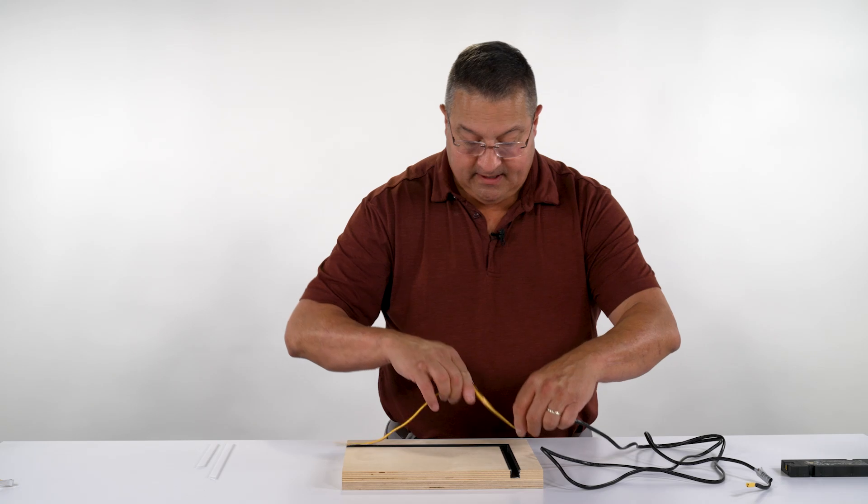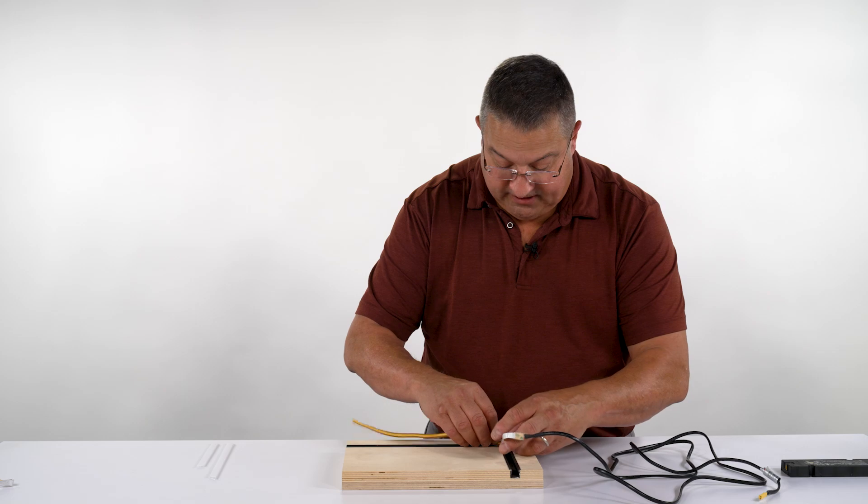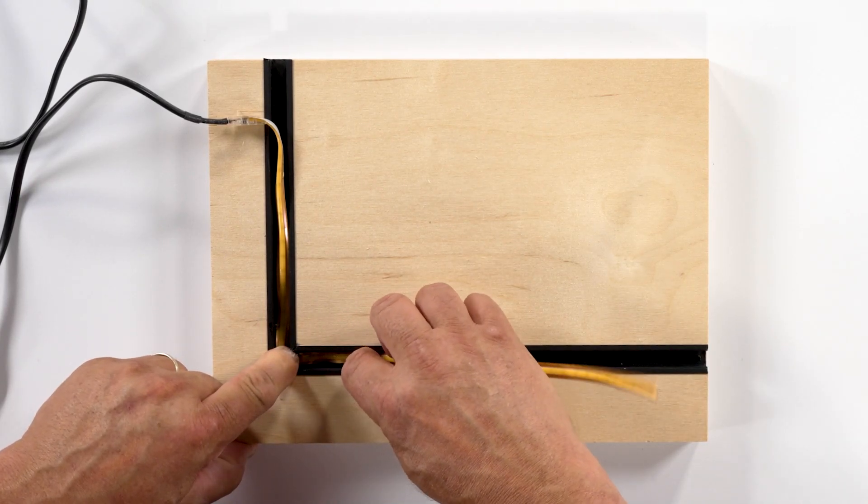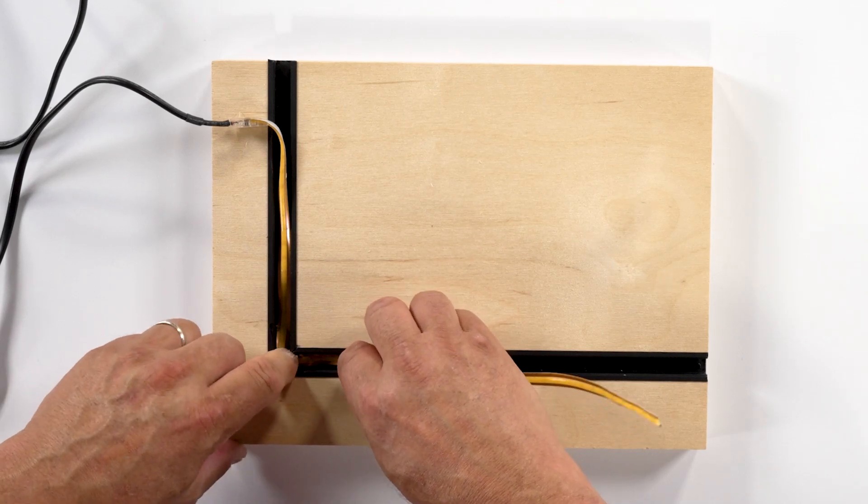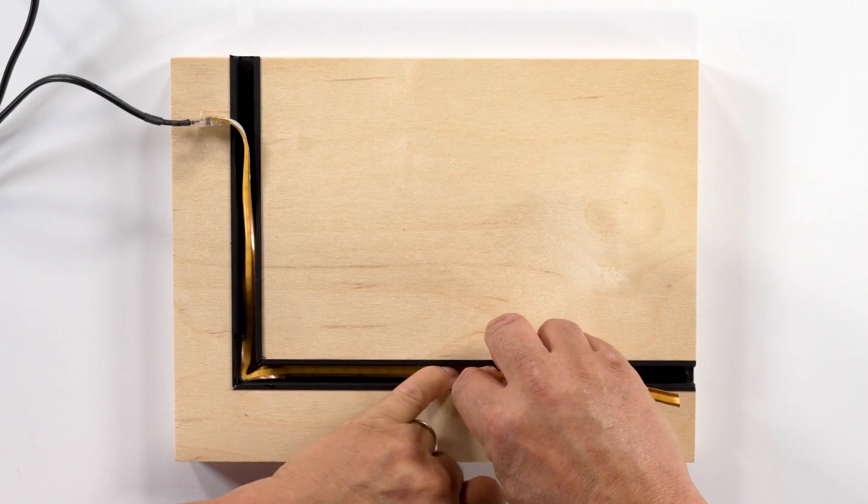From this point we would simply take the ramp and push it into the corner, seating it in the corner, and then we're going to seat the rest of the ribbon into the aluminum as it would fit into the bottom of the channel.